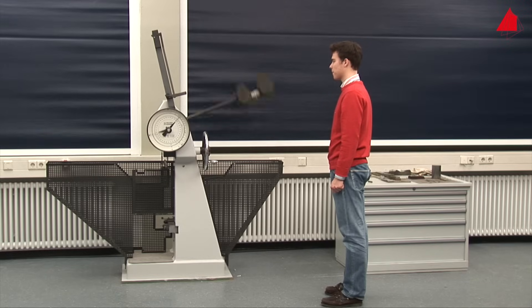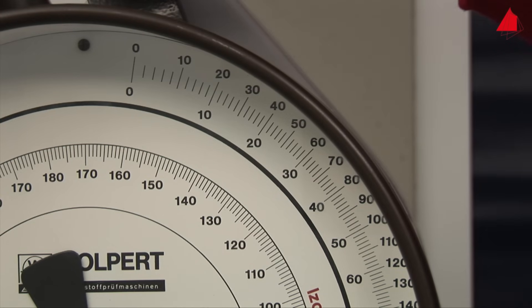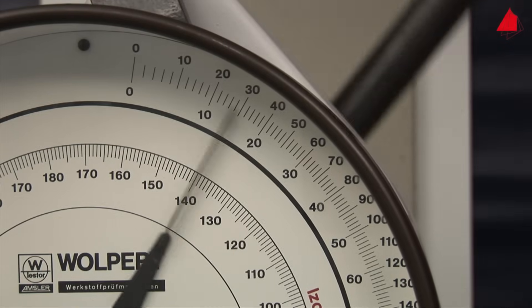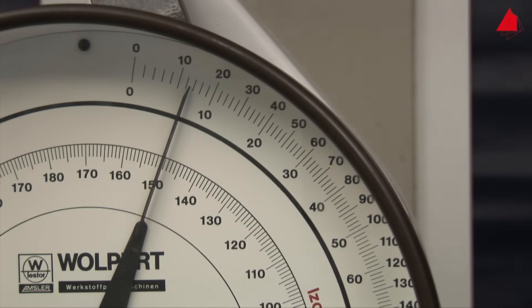The specimen absorbs part of the pendulum's energy so the pendulum doesn't reach the full height on the other side. The amount of energy that has been absorbed by the specimen can now be read off at the position of the drag indicator. It only amounts to 13 joules in this test.